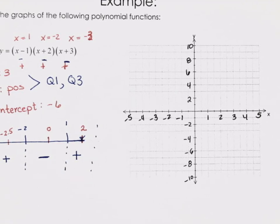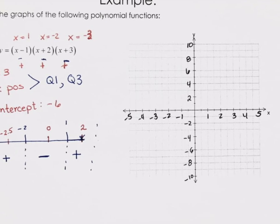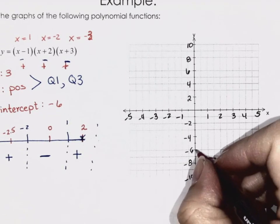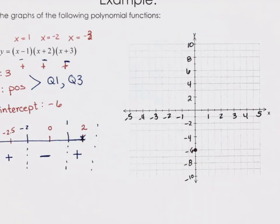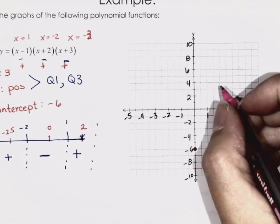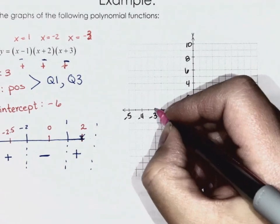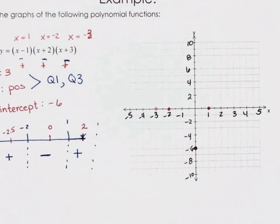First, I'm going to lay my x-intercepts on — that helps my brain. Put any intercepts on: x-intercepts and y-intercepts. You told me they're all straight cuts, so no bounces or drags for this one. Y-intercept at negative 6, x-intercept at 1, x-intercept at negative 2, and x-intercept at negative 3.